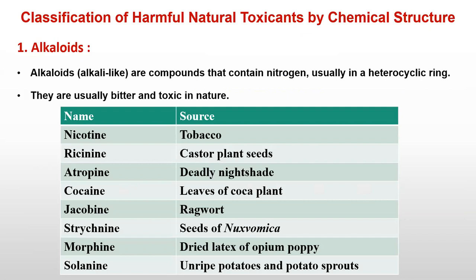The first classification is based on chemical structure, the chemical nature of the toxicant. First are alkaloids. Alkaloids generally have an alkali-like structure and are compounds that contain nitrogen and have a heterocyclic ring. Alkaloids are generally bitter in taste, and if consumed in higher concentrations, they may be toxic in nature.